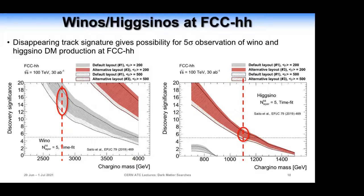At FCC-hh, there's been a study of the disappearing track signature, and for the kind of masses we expect for a dark matter candidate — with the chargino mass-degenerate with the LSP — you get significances well above 5σ for Wino LSPs and above 5σ even for Higgsino LSPs. This gives a strong possibility for discovering pure Wino or Higgsino dark matter.